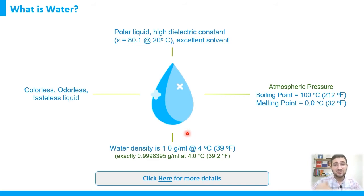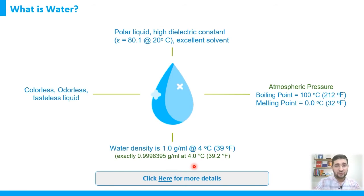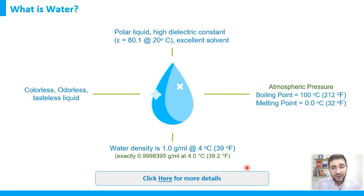Another important fact is related to water density. Water density is 1 gram per milliliter at 4 degrees Celsius — not at 20 or 25 degrees Celsius. Keep that in mind, because water density is highly affected by temperature. At higher temperatures the density changes compared to lower temperatures. More precisely, water density is 0.9998 g/mL at 4 degrees Celsius, which is 39.2 degrees Fahrenheit.